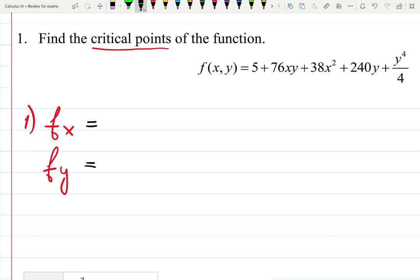Partial derivative with respect to x gives you 0 when I'm looking at 5, and plus 76y. Then with respect to x, it will be plus 76x, right? Then it's going to be plus 0 and plus 0.